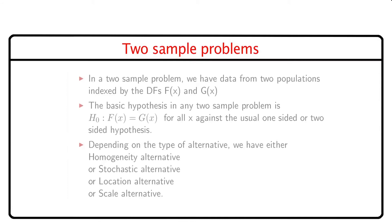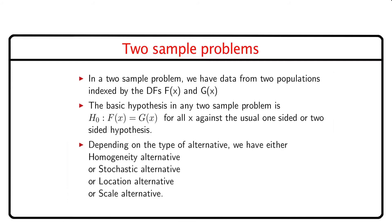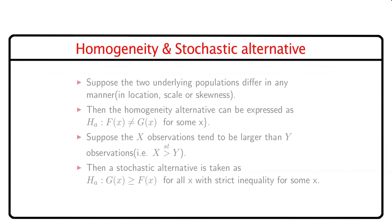Next, we discuss different two-sample problems. In a two-sample problem, we have data from two independent populations indexed by the distribution functions F(x) and G(x). The basic hypothesis is F(x) = G(x) for every x against the usual one-sided or two-sided alternatives. We have either a homogeneity alternative, a stochastic alternative, a location alternative, or a scale alternative. Suppose the two underlying populations differ in any manner — in location, scale, or skewness. Then the homogeneity alternative can be expressed as F(x) ≠ G(x) for some x.